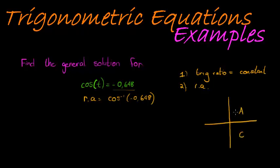Cos is negative in this quadrant and in that quadrant - in the second and third quadrant. Let's see what happens if I find my reference angle using my calculator.